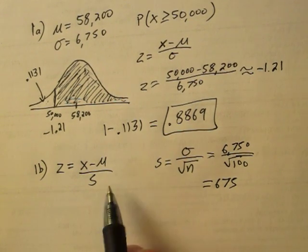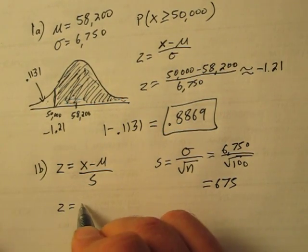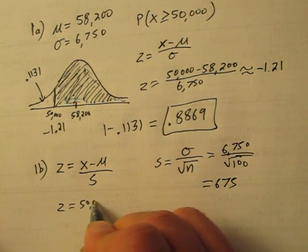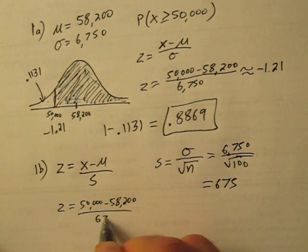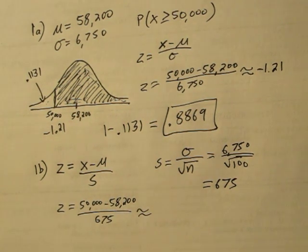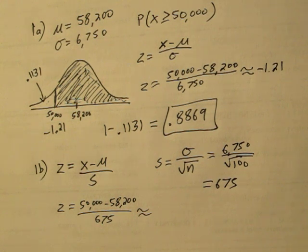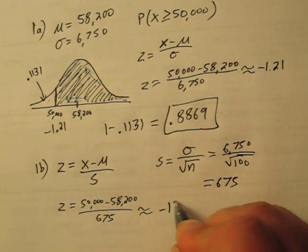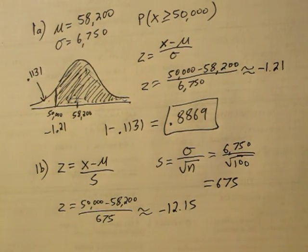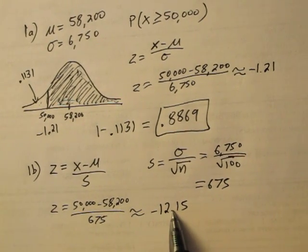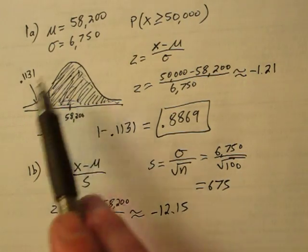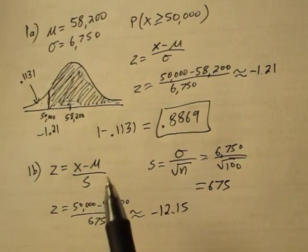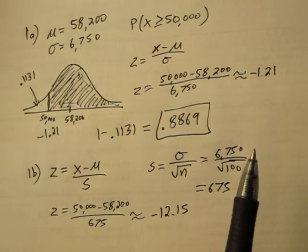Plugging this into our formula, our new Z score is negative 12.15. Notice this Z score is a lot more extreme than our previous Z score. Let's look at our probability density function, our bell curve, to see why this Z score is so extreme.